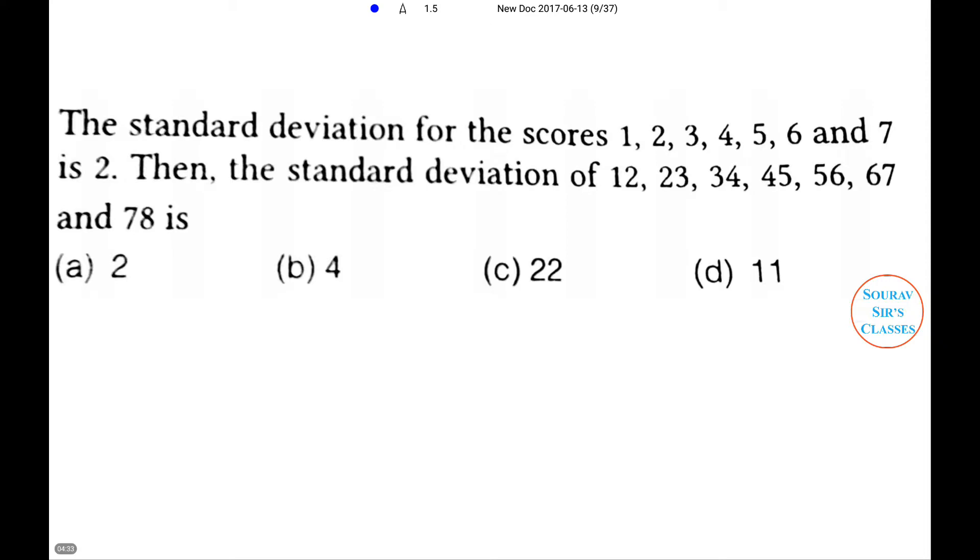The standard deviation for the scores 1, 2, 3, 4, 5, 6, 7 is 2. Then the standard deviation of 12, 23, 34, 45, 56, 67, and 78 is: 2, 4, 22, or 11.